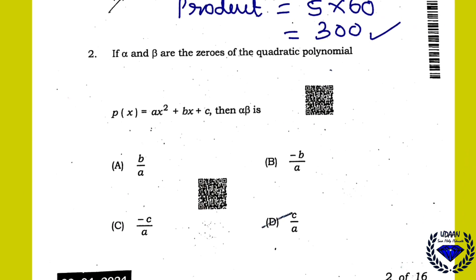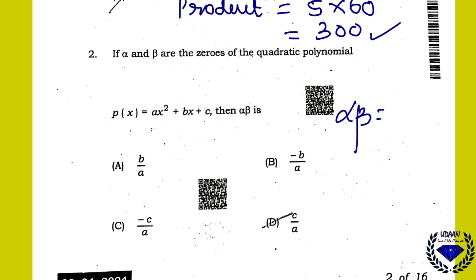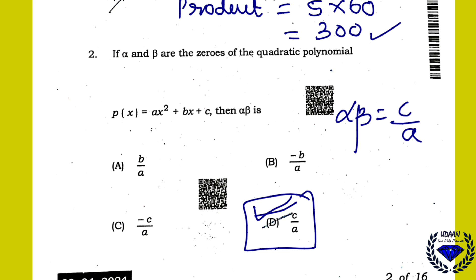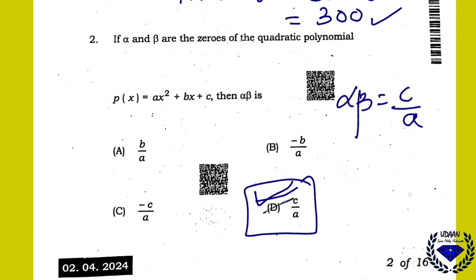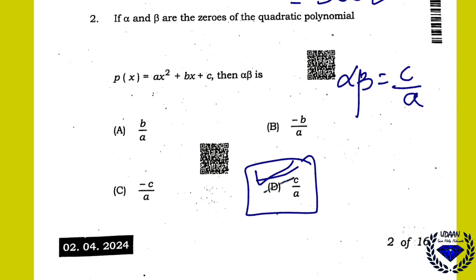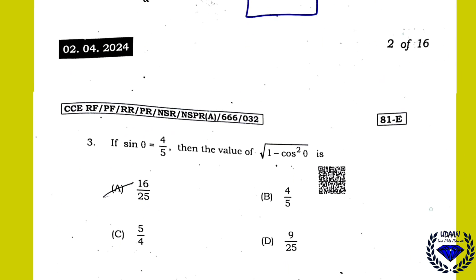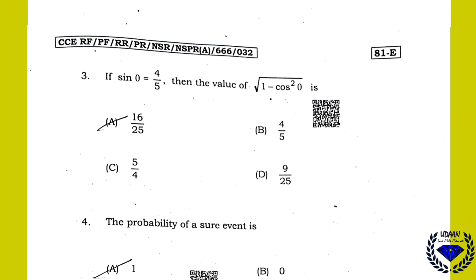Question 2: If alpha and beta are the zeros of quadratic polynomial P(x) = ax² + bx + c, then alpha × beta is the product of zeros, therefore it is c/a. So the right answer is option D, that is c/a.